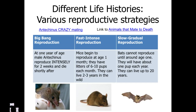The other life history strategy is slow, gradual reproduction. Bats cannot reproduce until around the age of one year, and then they tend to only have one offspring a year, but they live much longer — up to around 20 years in the wild. Domesticated cats and dogs generally don't reproduce until around nine months and tend to have fewer offspring. Humans cannot reproduce until approximately age 12 to 14 depending on the individual, tend to have only one offspring at a time, but have a much longer life expectancy.